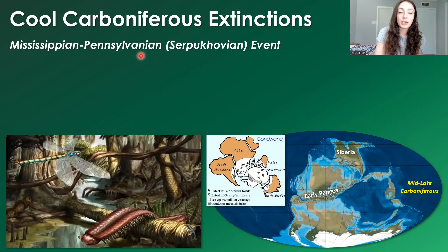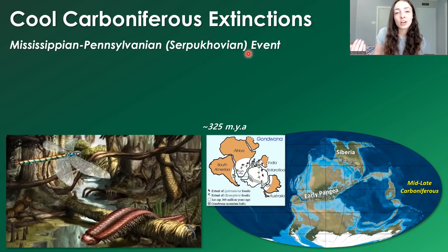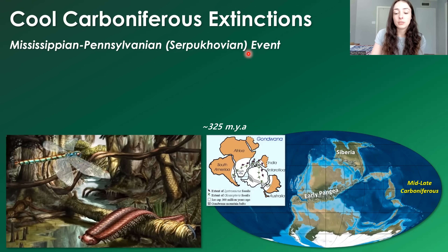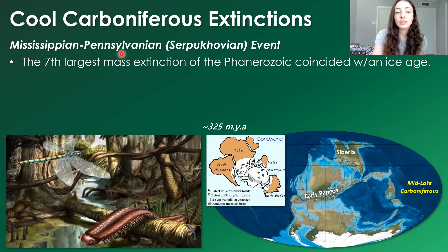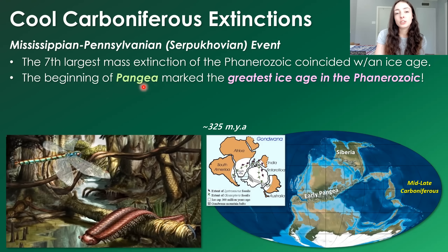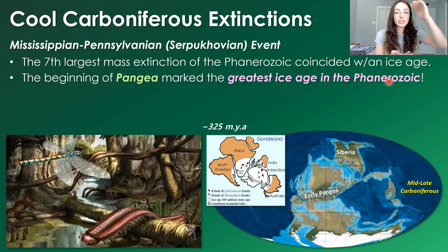Now getting to the Mississippian-Pennsylvanian, or Serpukhovian, event. This occurred in the Carboniferous period of the Paleozoic era, which is broken into sub-periods Mississippian and Pennsylvanian. This is the seventh largest mass extinction of the Phanerozoic era, and it coincided with an ice age or cooling event. This ice age took place during the building of Pangaea and marks the greatest ice age of the Phanerozoic eon — the time from the Cambrian to today, about 550 million years ago.